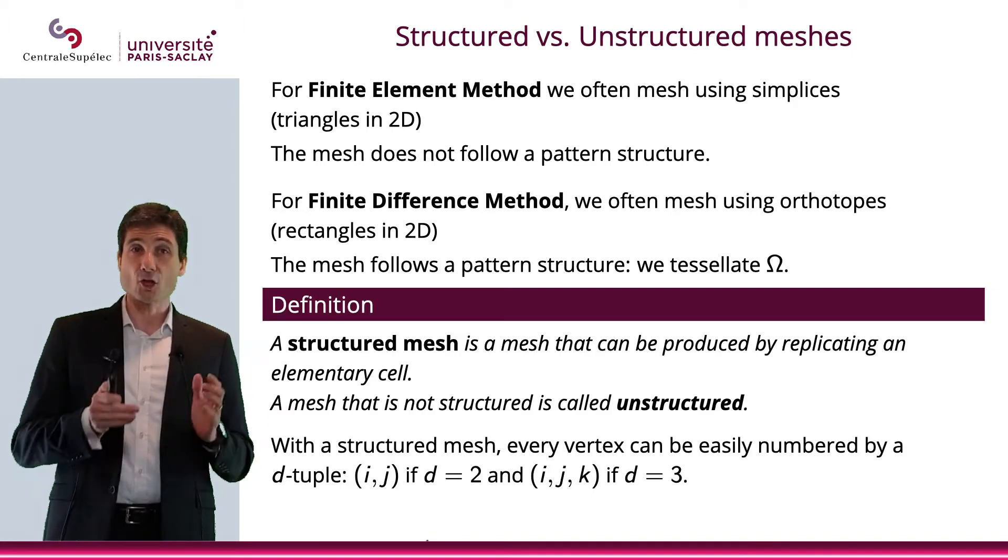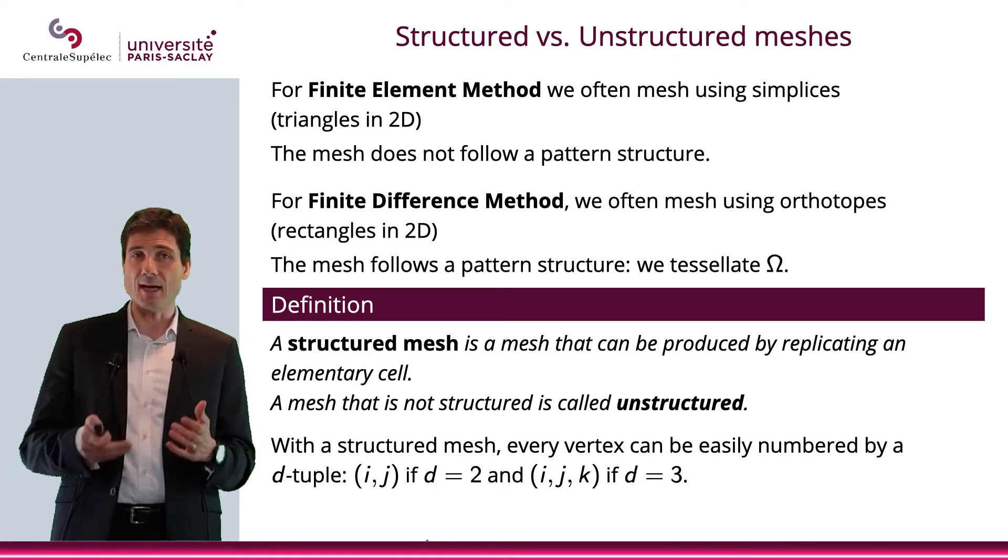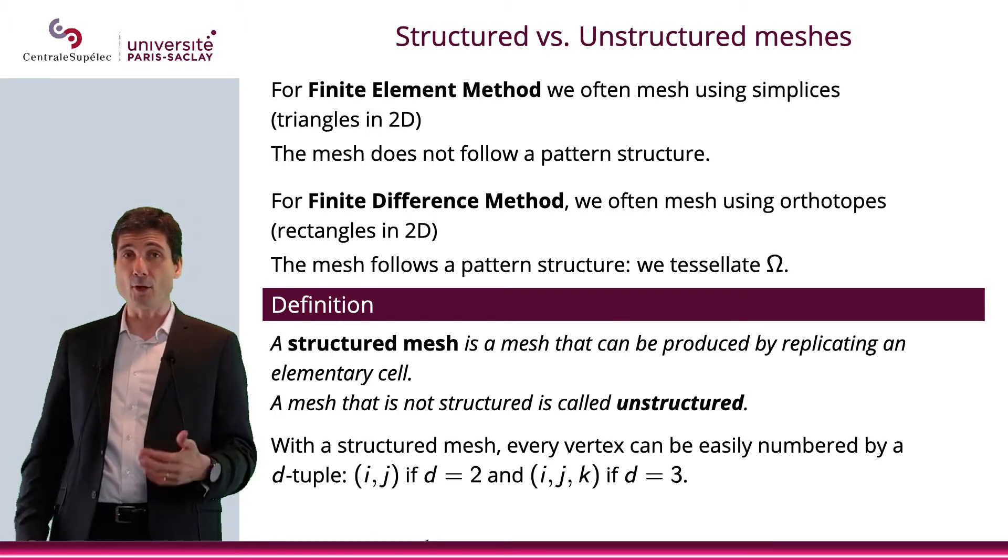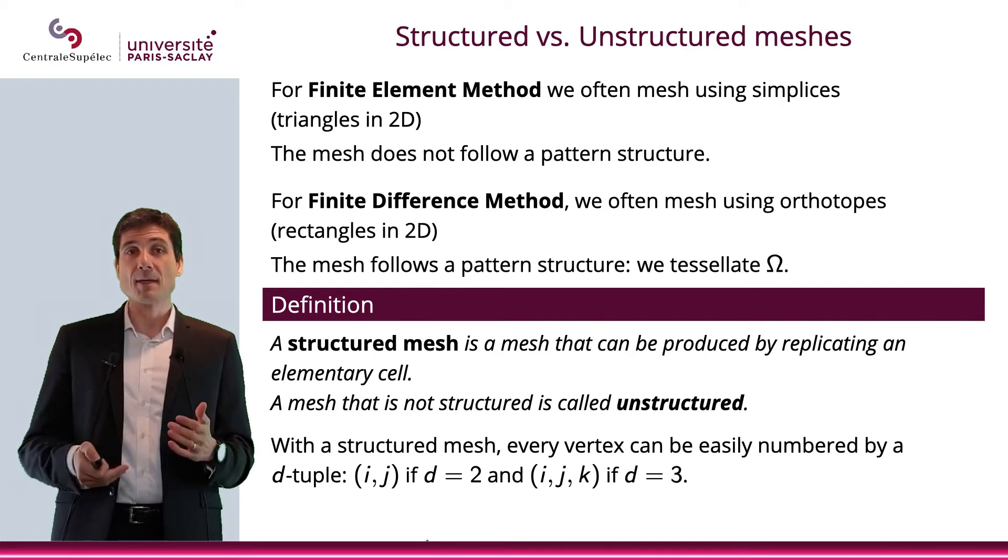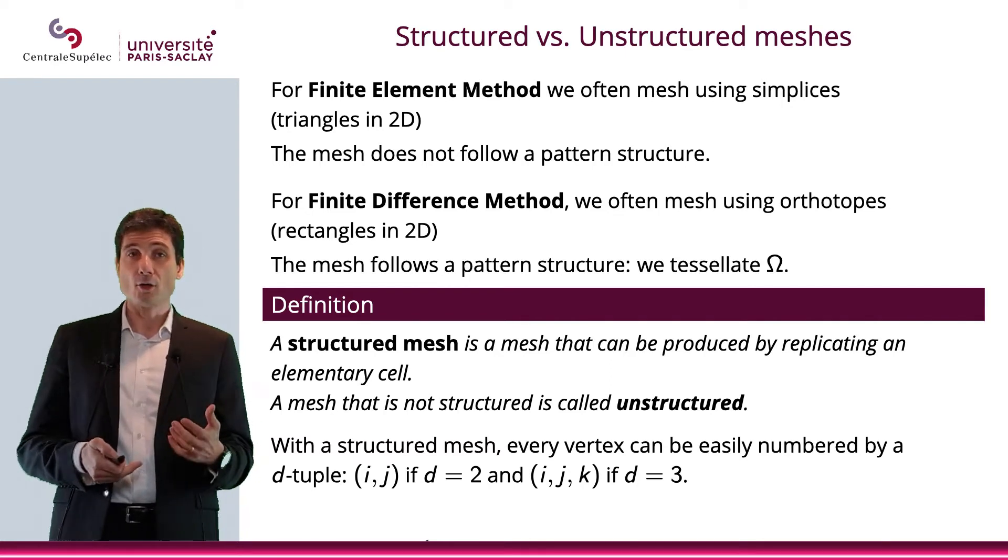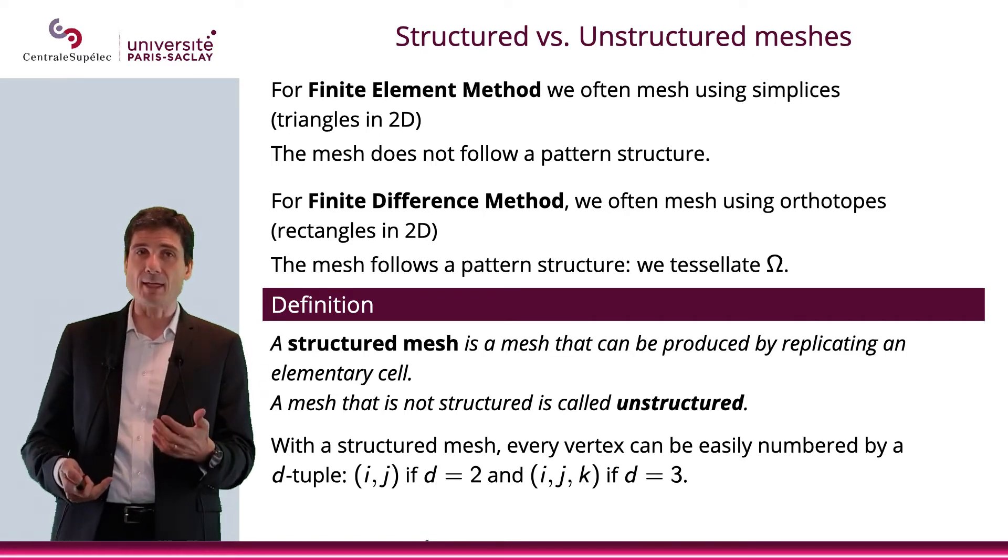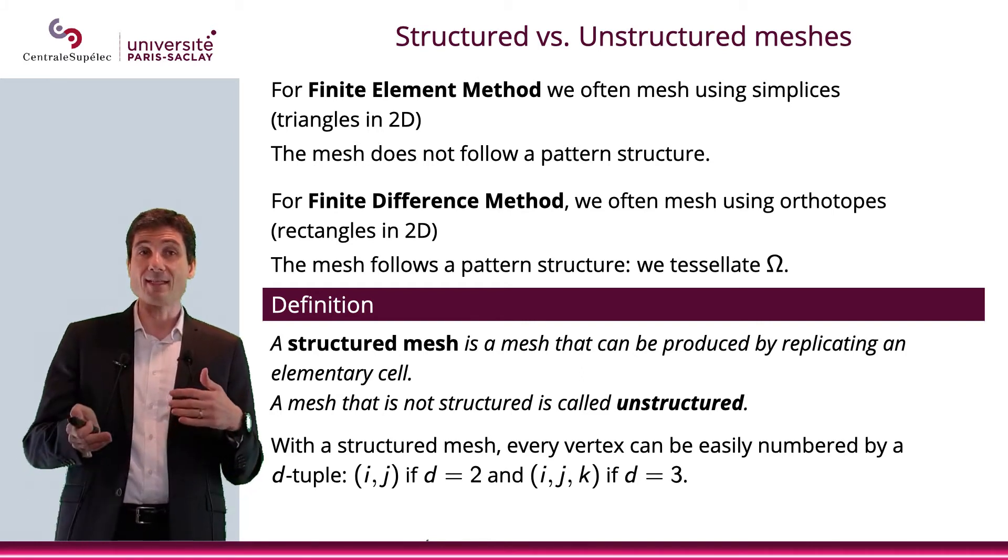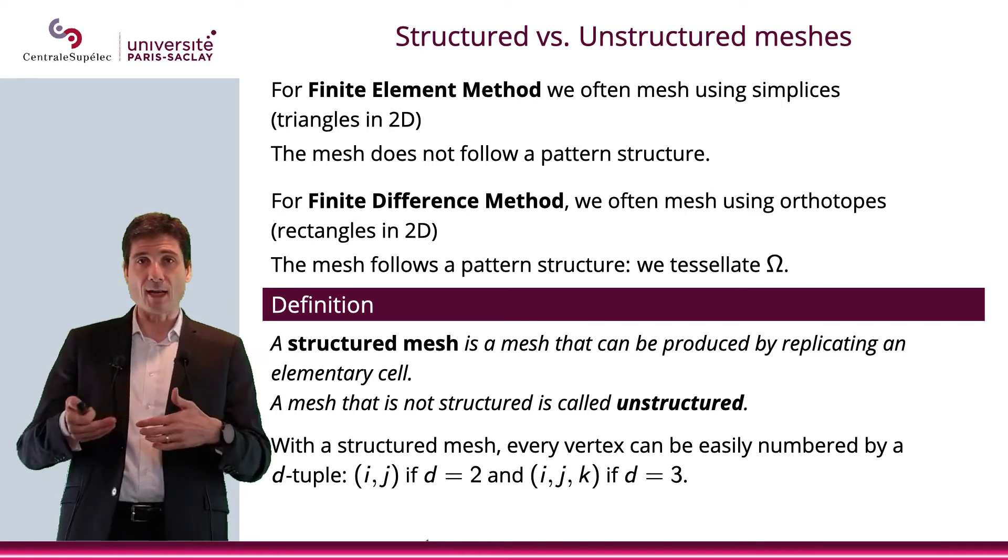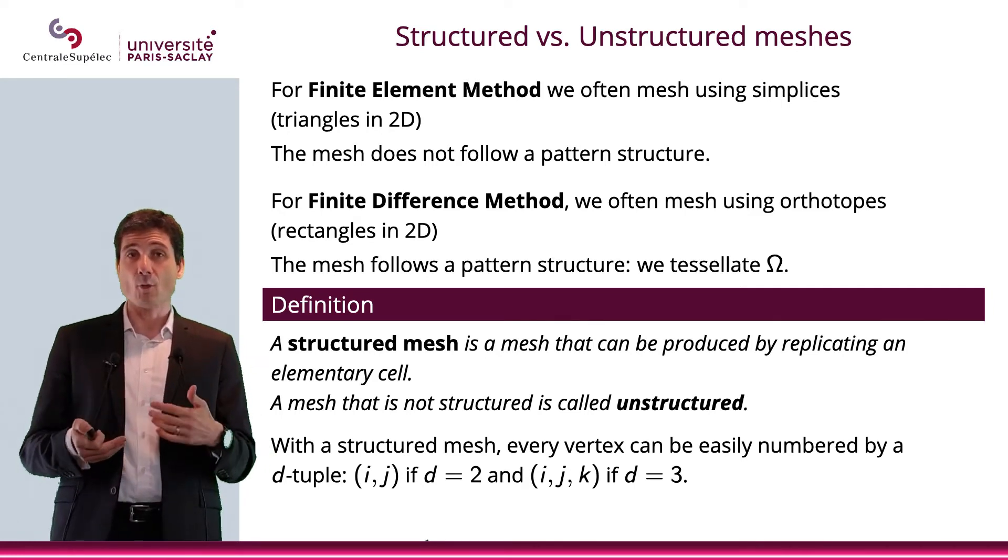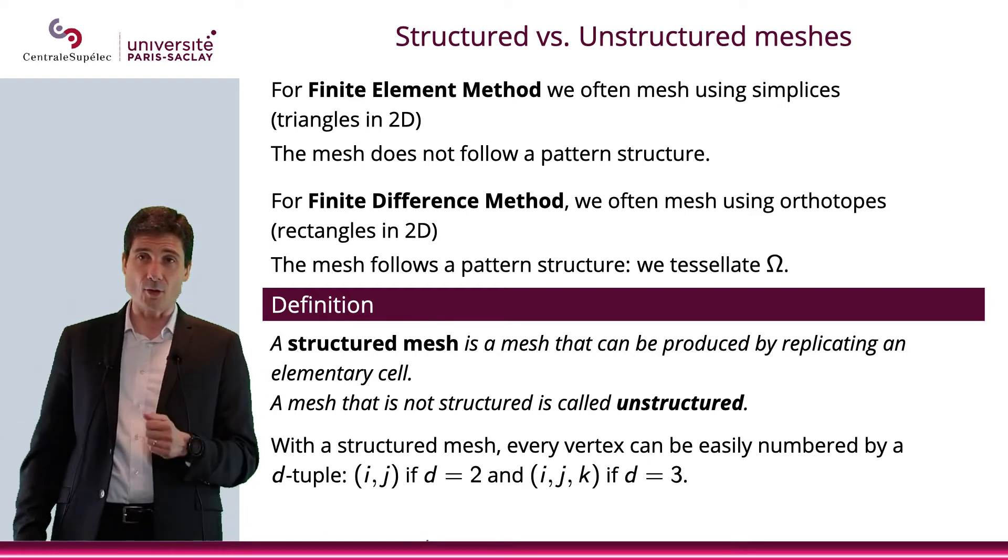We're going to define a structured mesh as a mesh that can be produced by replicating an elementary cell. And if it's not the case, it will be called unstructured. Of course, we would prefer to have a structured mesh when we can. Because it will be easier to number the elements of the mesh. And basically, every vertex will be numbered extremely easily with a tuple. So (i,j) if you're in dimension 2, (i,j,k) if you're in dimension 3. And of course, you can have a numbering system which will be extremely useful and extremely efficient in terms of what is to come.